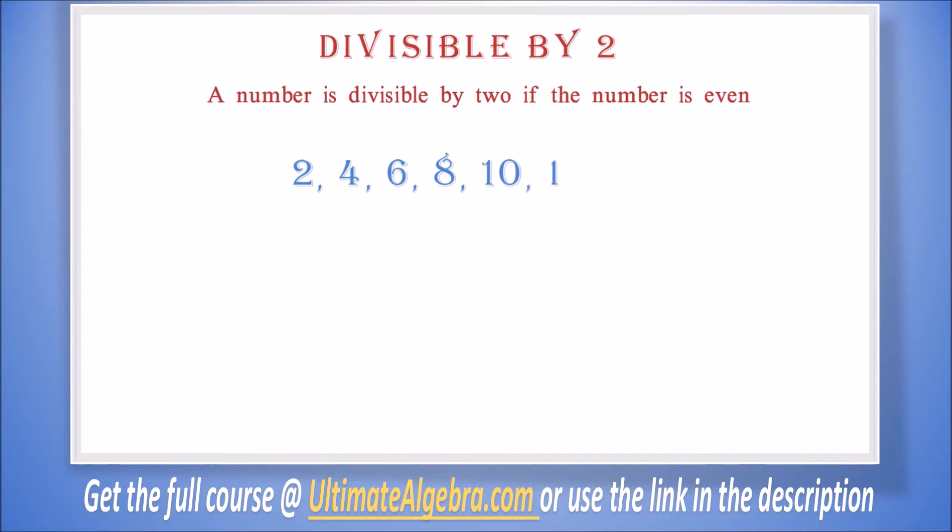It will be good to copy it down because we will be using it again in this lesson. Divisible by 2: A number is divisible by 2 if the number is even. Even numbers are 2, 4, 6, 8, 10, 12, and so on. Another way to look at this is if the unit digit is 0, 2, 4, 6, or 8, then it is divisible by 2. For example, 456 is divisible by 2 because the unit digit is 6. 60 is divisible by 2 because the unit digit is 0.